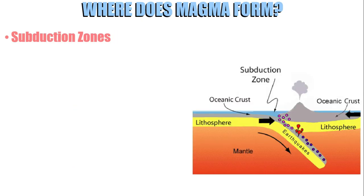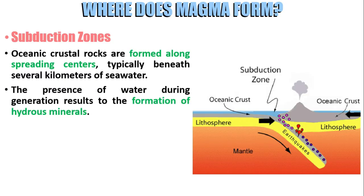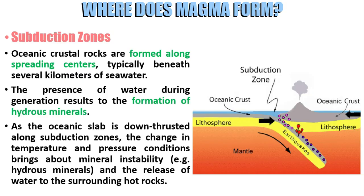Lastly, we have subduction zones. Oceanic crustal rocks are formed along spreading centers, typically beneath several kilometers of seawater. The presence of water during generation results in the formation of hydrous minerals — meaning minerals that contain water. As the oceanic slab is down-thrusted along the subduction zone, the change in temperature and pressure conditions brings about mineral instability and the release of water to the surrounding hot rocks.